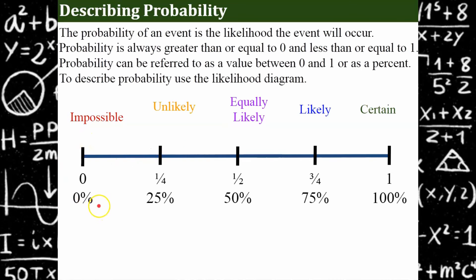If something is impossible — say, rolling a ten on a standard number cube — you can't do it because there are only numbers one through six, so the probability is zero. It's never less than zero. On the other end, if I ask what's the chance the sun rises tomorrow, that's pretty certain — that probability is one, or one hundred percent. One hundred percent written as a decimal is one.